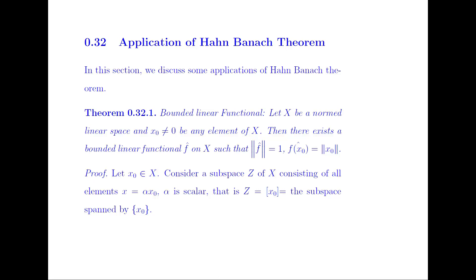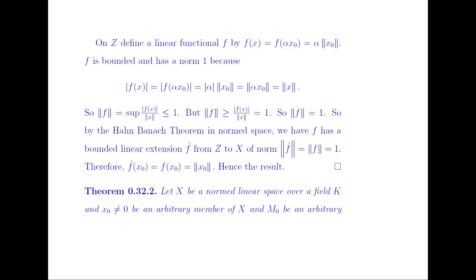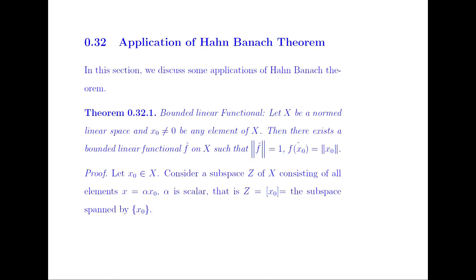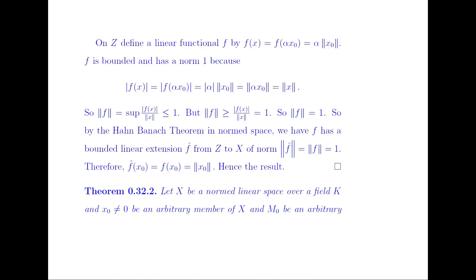And the extension of f at X₀ is equal to the norm of X₀. Let X₀ belong to X and consider a subspace Z of X consisting of all elements X which can be written as α times X₀, where α is a scalar. So Z is the subspace spanned by X₀. On Z, define a linear functional f by f(αX₀) = α times norm of X₀.